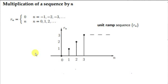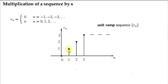Next, we will consider the Z-transform of a sequence multiplied by n, the unit ramp sequence. The sequence n is defined for non-negative values: when n is 0, the sequence is 0; when n is 1, the term is 1; when n is 2, the term is 2; and so on. It is called the unit ramp sequence because each term is 1 greater than the previous — we ramp up by 1 each time. Before multiplying the ramp sequence by an arbitrary sequence, we will first find the Z-transform of the ramp sequence itself.